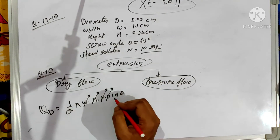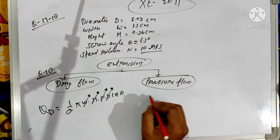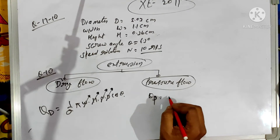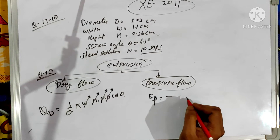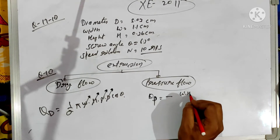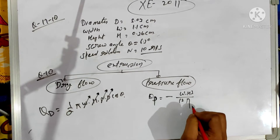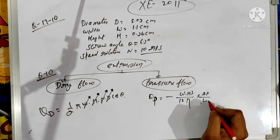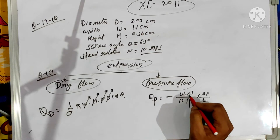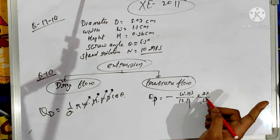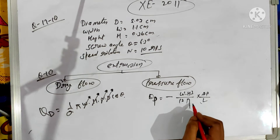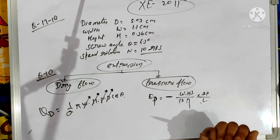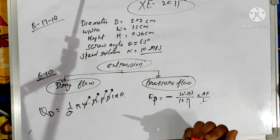D is the diameter of the extruder and theta is the angle of the screw. The discharge due to pressure flow is given by: QP = -(W × H³) / (12 × η) × (ΔP / L). Here ΔP is the change in pressure, L is the length of the extruder, H is the height of the flight, W is the width of the screw, and η is the viscosity of the polymer melt. The minus sign indicates the flow is in the opposite direction of the material flow.